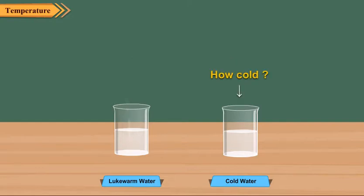Now can you say how cold or how warm the water is? The answer is no. By dipping fingers we can just say which tumbler has warm water and which has cold water. But we cannot say how much cold or how much hot the water is. This measurement is called temperature.